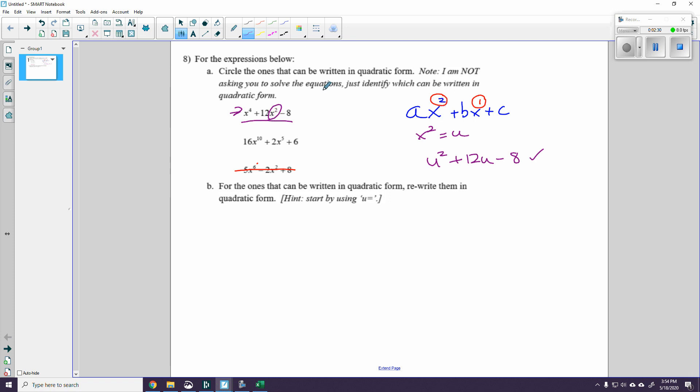And if I want to bring the x's back, I could say x squared squared, because u equals x squared, plus 12 times x squared, and I'm putting it in parentheses so that I can see that it's the power of 1, and that's the power of 2, minus 8. So either of those are totally acceptable, writing it in quadratic form, as long as you specify that you are making x squared equal to u.